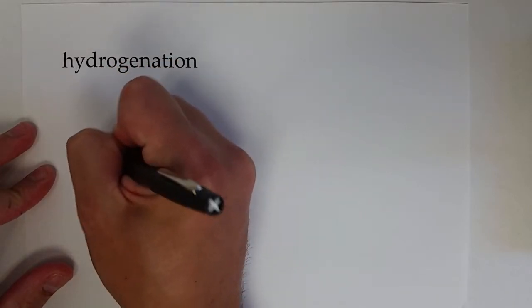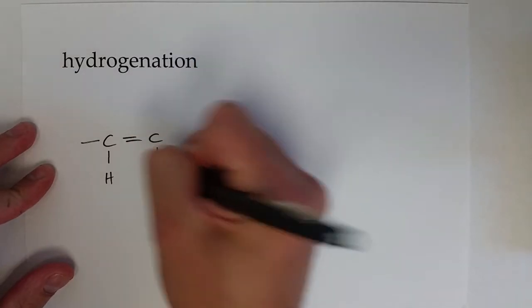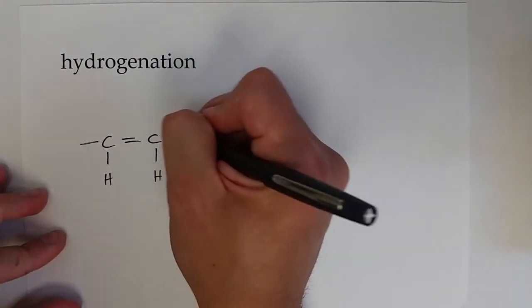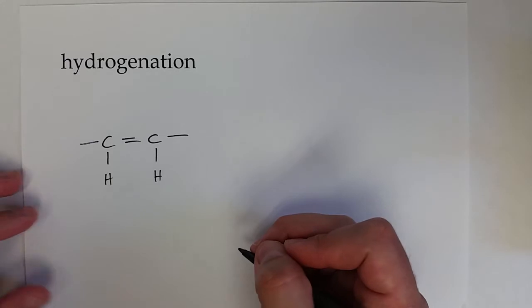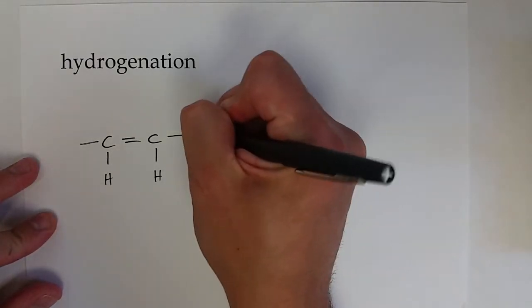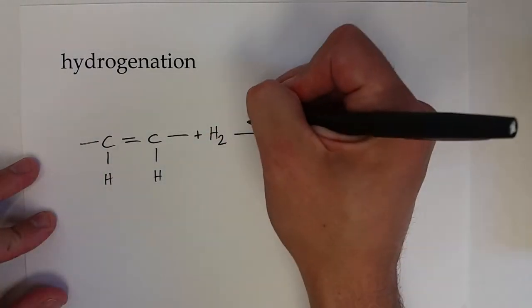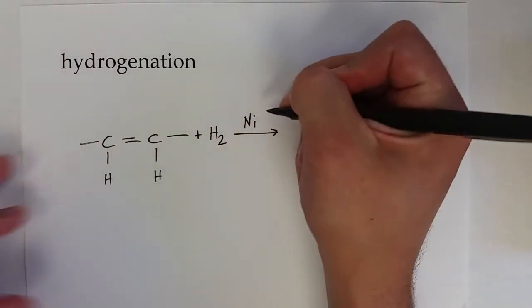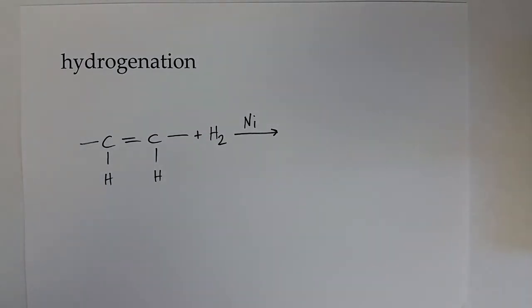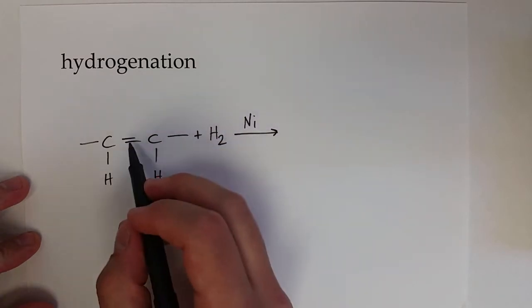We actually add hydrogen to them to saturate those double bonds. You usually need a catalyst to speed up these reactions, and nickel is a very common one. What happens is these two hydrogen atoms are added to those carbons where that double bond exists.